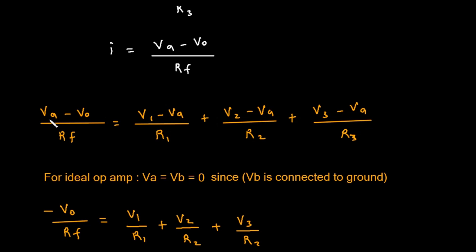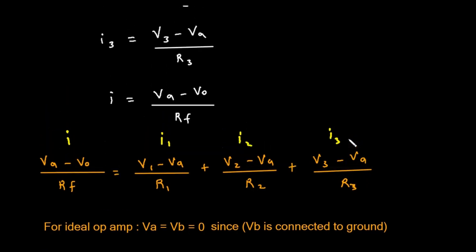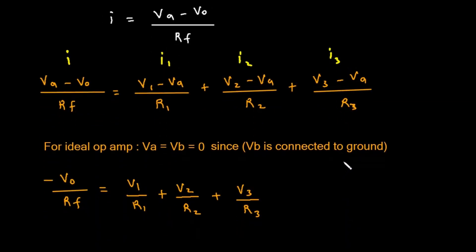On the left side, representing current I, we have (Vi minus Vo) divided by Rf. This equals the sum of the other three currents on the right side: (V1 minus Vi) divided by R1, plus (V2 minus Vi) divided by R2, plus (V3 minus Vi) divided by R3.